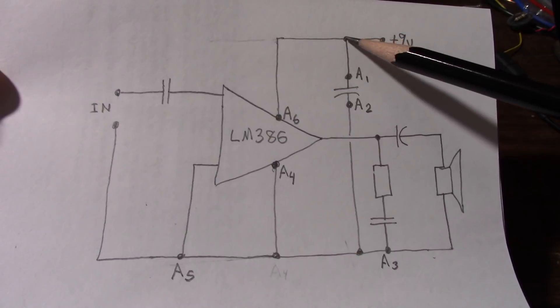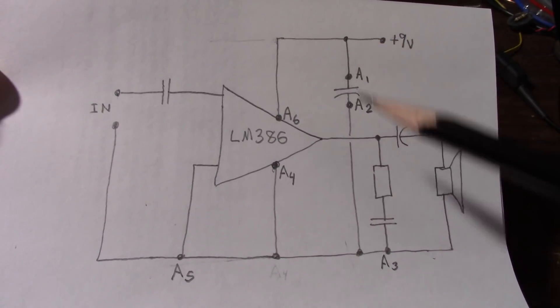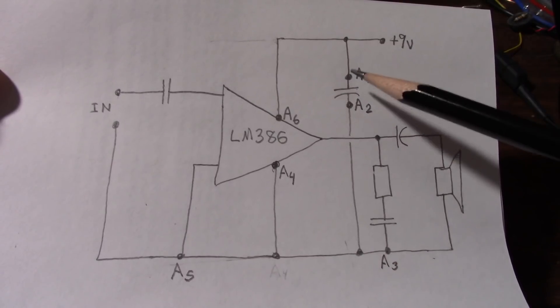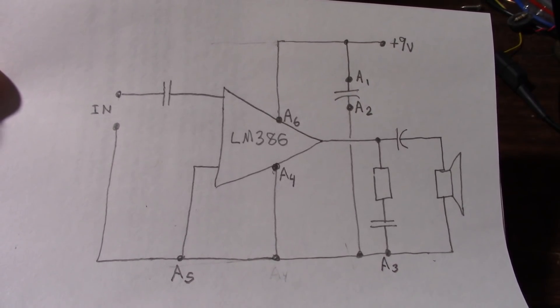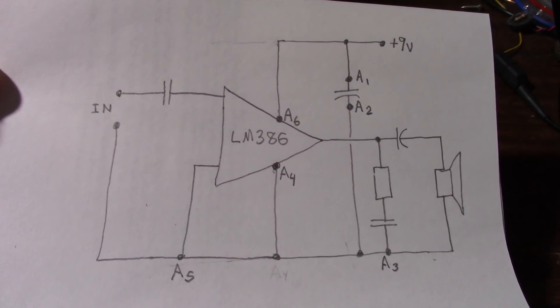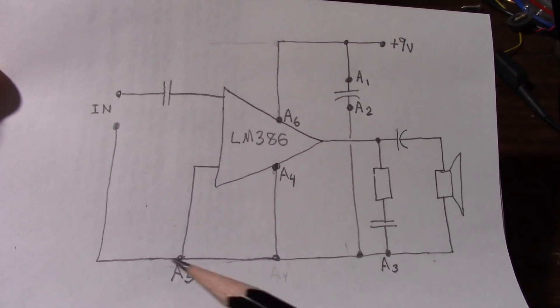That's this capacitor that goes from the supply rail to ground. Well, if you scope across that, it might look fine. You may not have much noise or any noise. You have to scope at different positions.